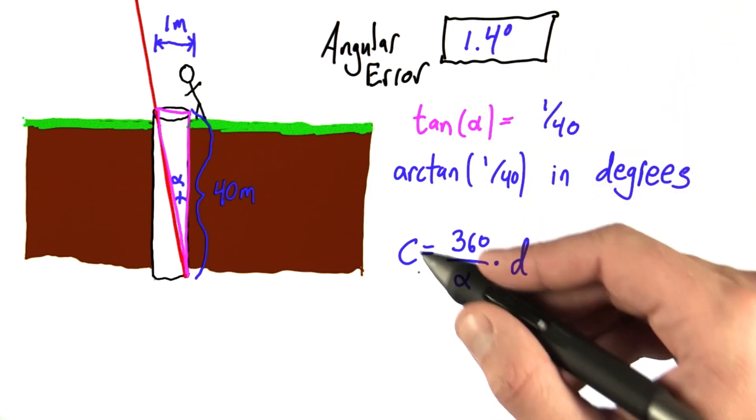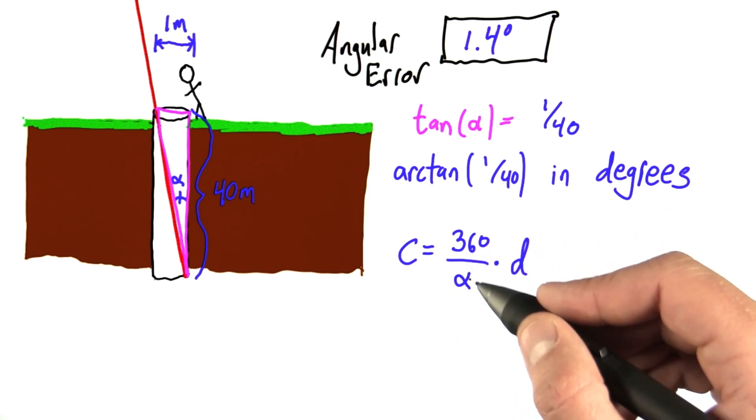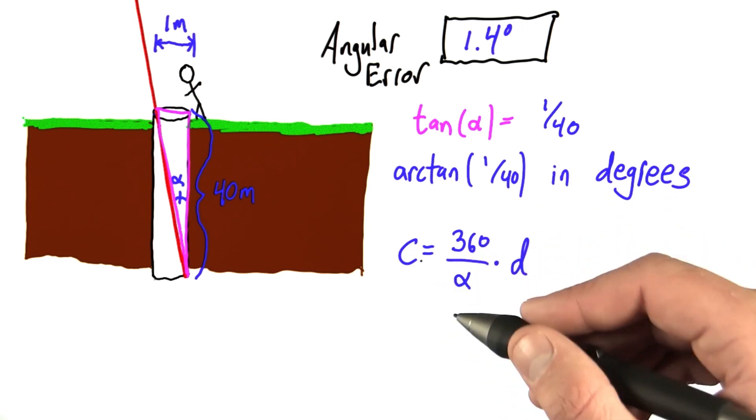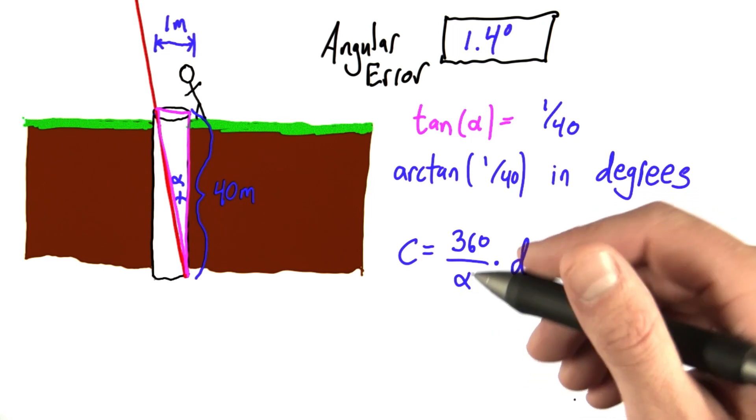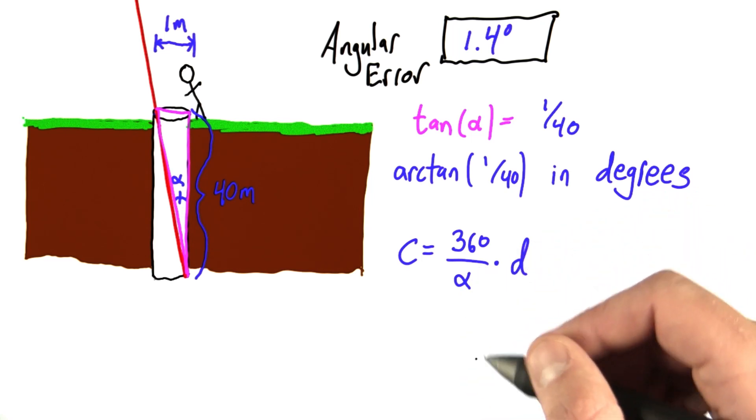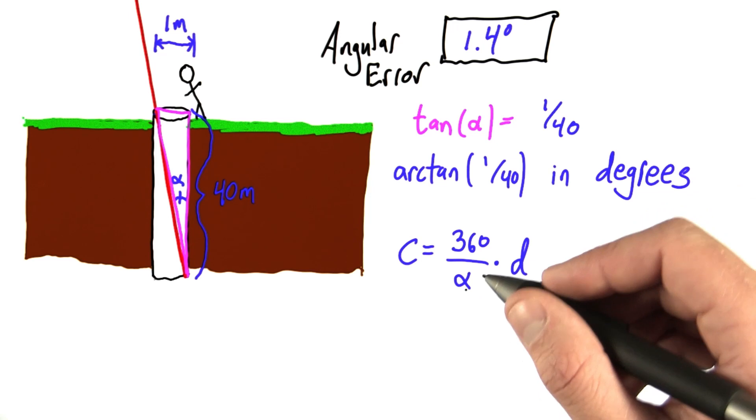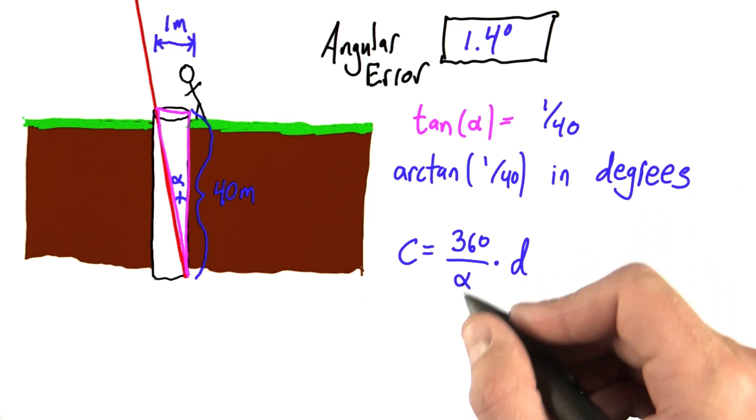Now, the question is, how do we figure out how a change in alpha changes our circumference? And there's many ways to do this. Some involve some calculus, but a really simple way to do it is just to calculate our extreme cases. And what do I mean by that? Well, before...